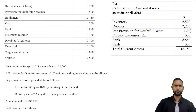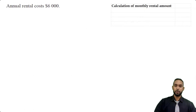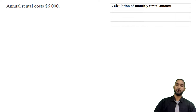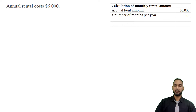The last part asks us to calculate the monthly rental amount. We know from the question that the annual rental cost is $6,000 — that's for the whole year. There are 12 months in a year, so we simply divide $6,000 by 12, giving a monthly rental charge of $500.